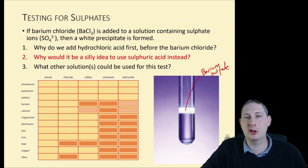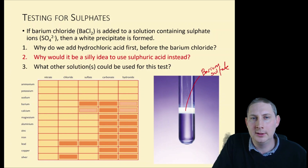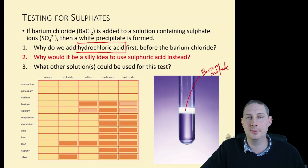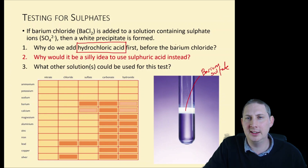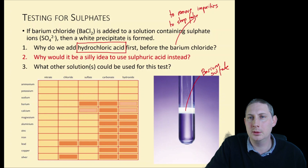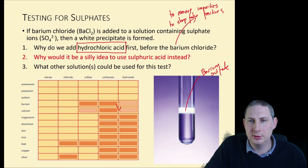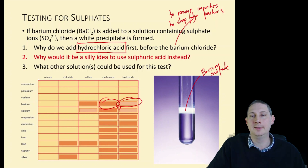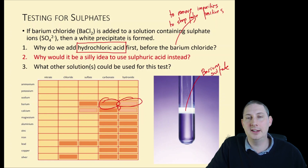We often add hydrochloric acid first. Why? To remove impurities — to stop false positives. Barium carbonate is insoluble, as is barium hydroxide, so if there's a carbonate or hydroxide present they would give a precipitate. We don't want that, so we add hydrochloric acid first to remove those impurities.